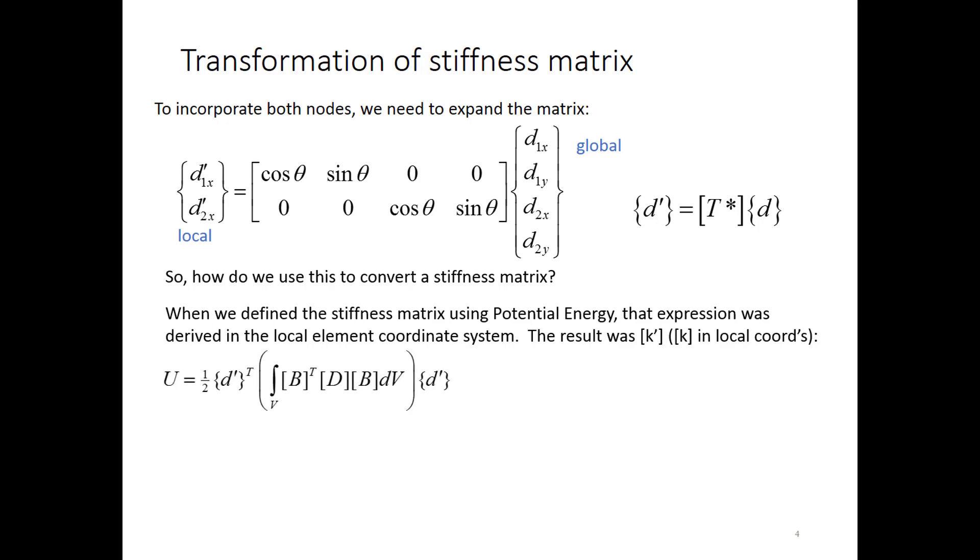So in fact, what we had developed was something that we'll call k prime, k in the local coordinate system. And this came from the internal strain energy expression. Everything in parentheses shown here is what we're calling k prime. That is what we defined to be the stiffness matrix. But because it's integrated over the element's coordinate system, it is a local coordinate stiffness matrix. And you can see then it's pre and post multiplied by the local coordinate degree of freedom vector.